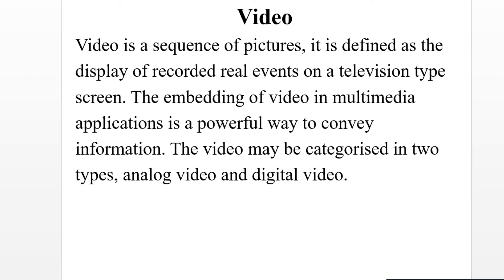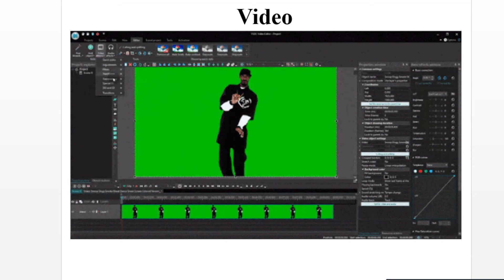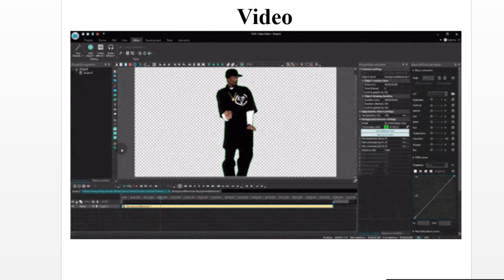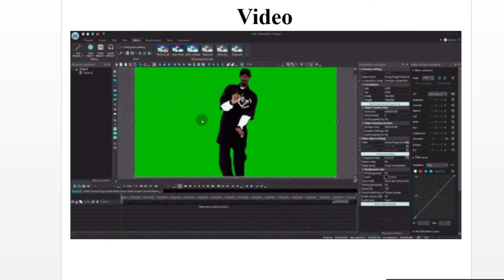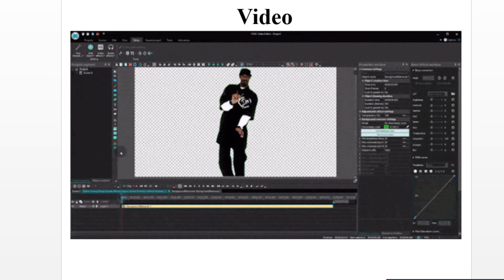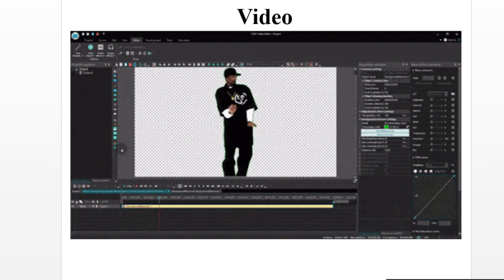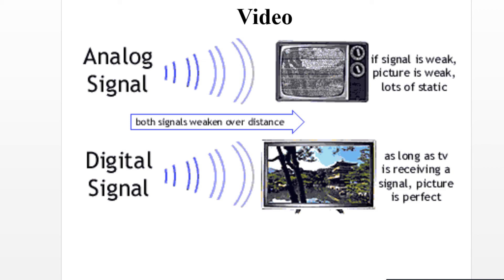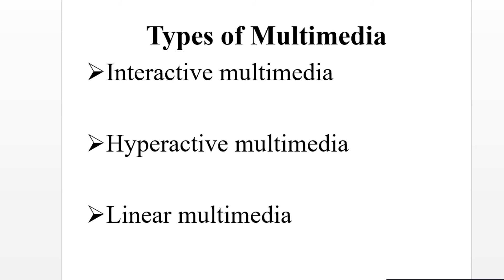Video is a sequence of pictures. It is defined as the display of recorded real events on a television-type screen. The embedding of video in multimedia applications is a powerful way to convey information. Video may be categorized into two types: analog video and digital video. There are three types of multimedia: interactive multimedia, hyperactive multimedia, and linear multimedia.